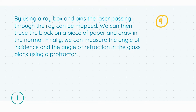The nine marks were broken down into three sets of three. You got three marks for mentioning that you use a ray box and a laser to determine the angle. You got another three marks for mentioning that a normal is drawn at the point of incidence. And the final three marks were for stating that the angle between the normal and the ray in the block is measured with a protractor. Get all of these right and you get your total of nine marks.